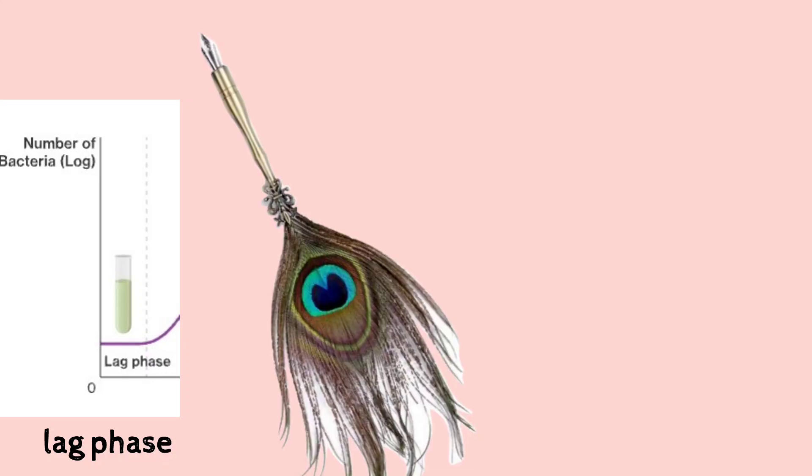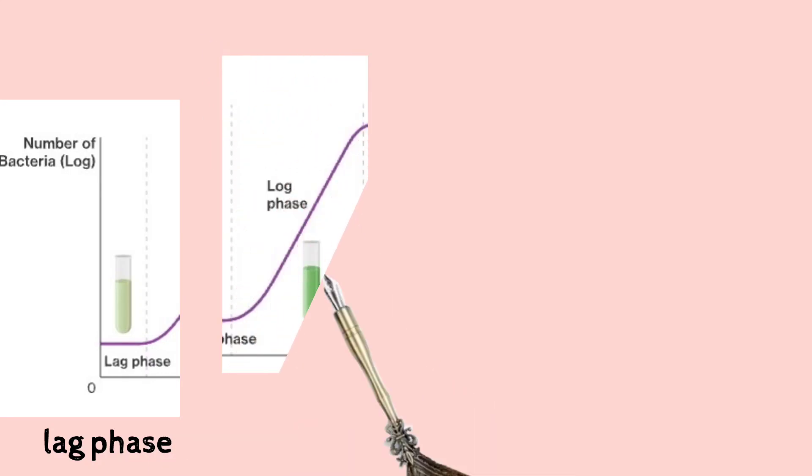Before the binary fission, the cell needs to get enlarged, increase the volume before the division. And very little growth is actually there. So this is the lag phase. And then there is a normal growth phase, that is exponential growth phase. A period of maximum growth will continue as long as the cells have adequate nutrient and a favorable environment for their growth.